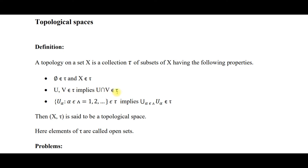And finally, if {U_α : α ∈ Λ}, where Λ = {1, 2, 3, ...}, belongs to τ, then the union ∪U_α also belongs to τ — that is, an arbitrary union of elements of τ also belongs to τ. Then we say that (X, τ) is a topological space, and elements of τ are called open sets.